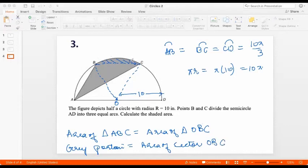Now, how do I find the sector area? I know that each of these angles is the same. So I know this is 60 degrees. I know that this will be an equilateral triangle with side length equal to the radius.